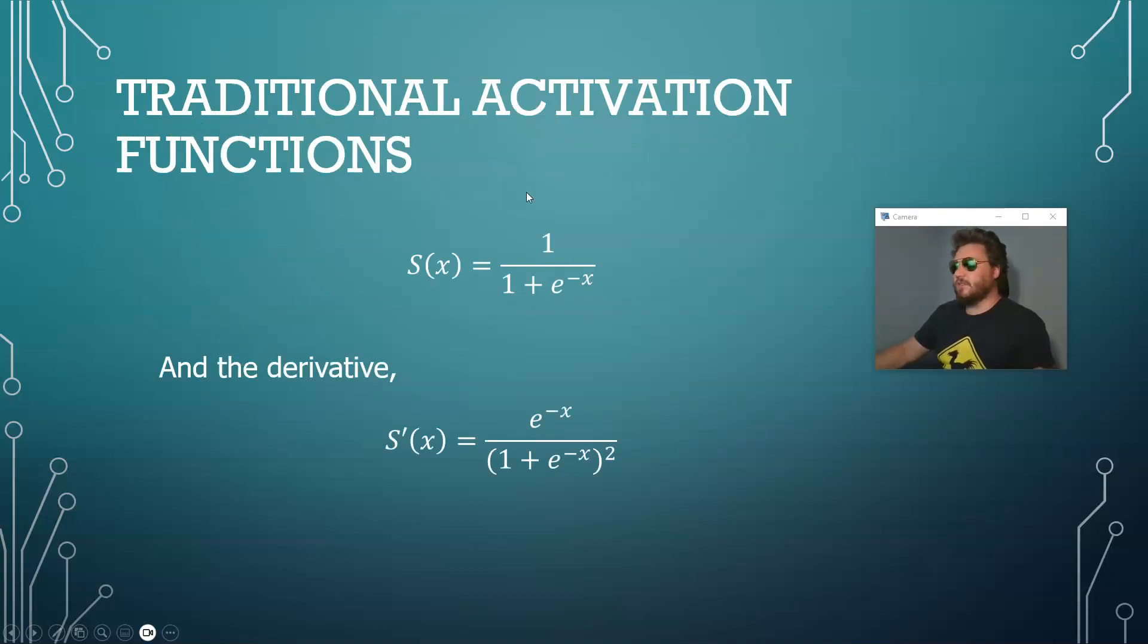So a traditional activation function looks like this, you have s(x) equals in this case the sigmoid or the logistic function so 1 divided by 1 plus e to the minus x and we just take the derivative of that because we need to use the derivative in the gradient computation.